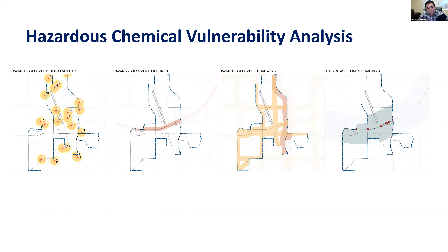For the hazardous chemical vulnerability analysis with the City of Addison, we used GIS layers — Tier 2 report facility locations around Addison — and did some buffering around those facilities. We also brought in pipelines, roadways, highways, and railways. It's a pretty straightforward project: we combined spatial data layers to provide a quick look at vulnerability for the City of Addison, which is a small city, but it's a way to bring GIS resources to a small department.